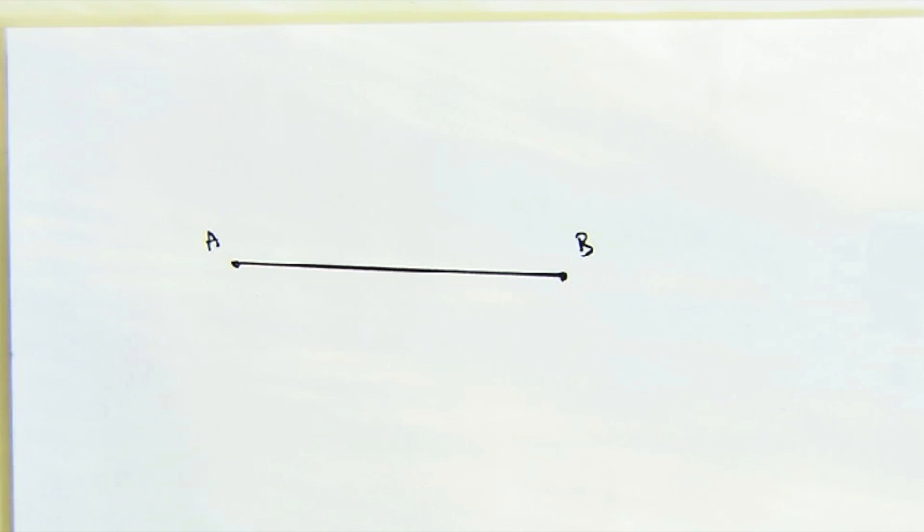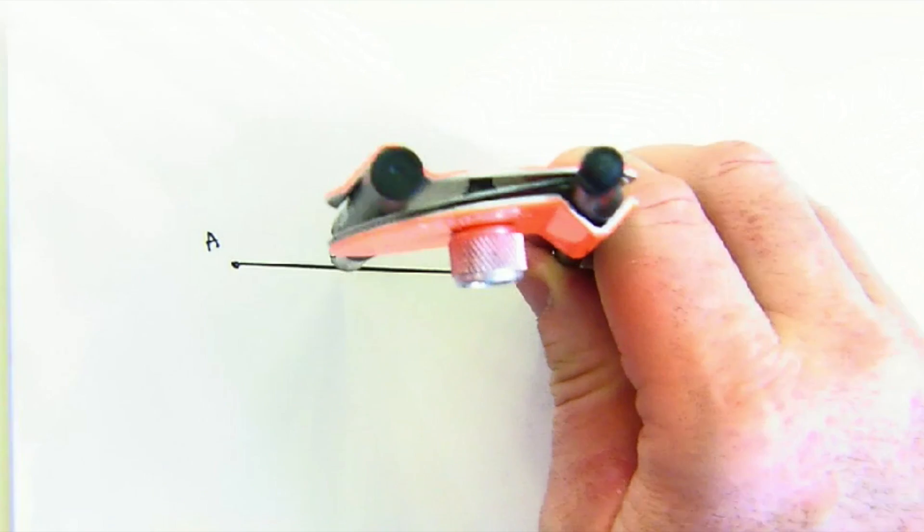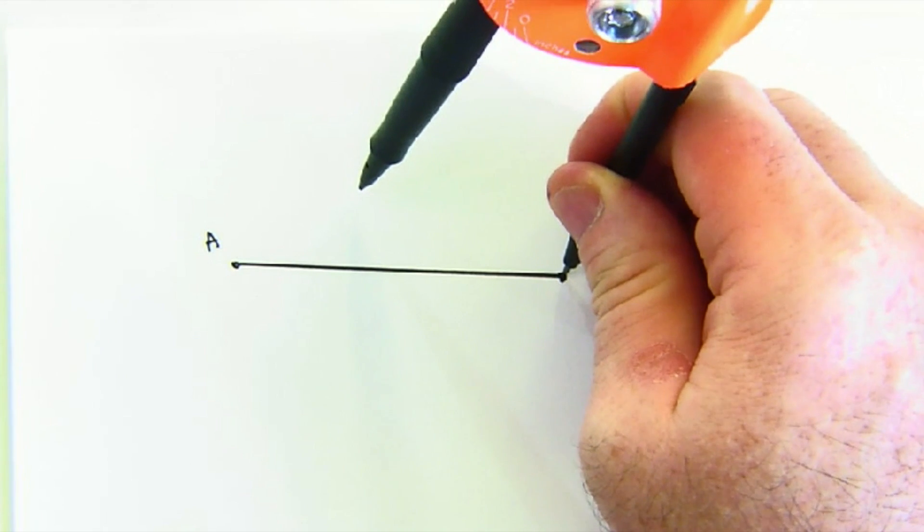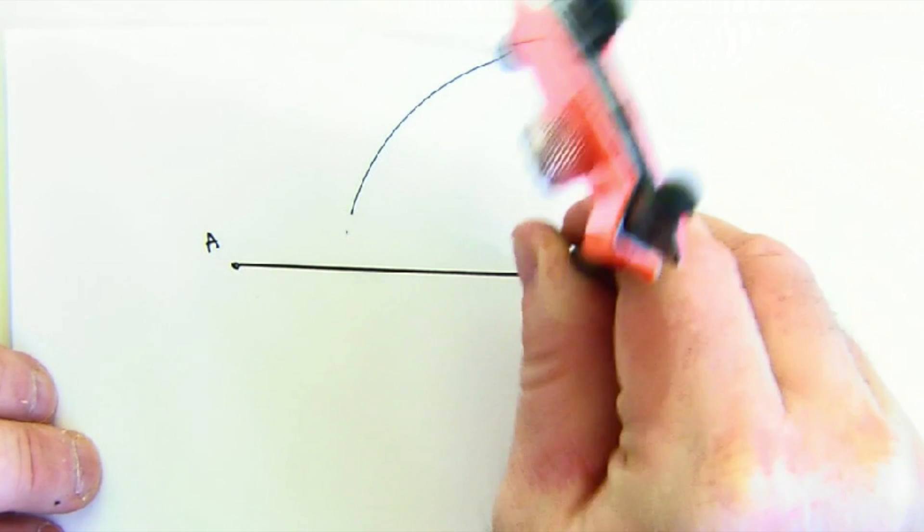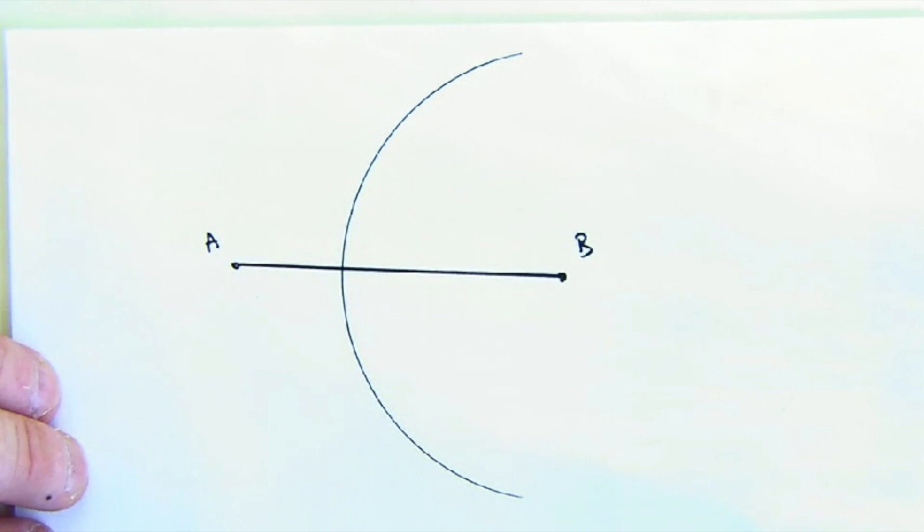What we do in constructing a midpoint is we pull our compass beyond halfway. That's kind of weird because we normally think that we should pull it to half, but we don't know where half is. We're going to go past half, and we're going to make, and actually I'll do the full arcs this time, an arc.